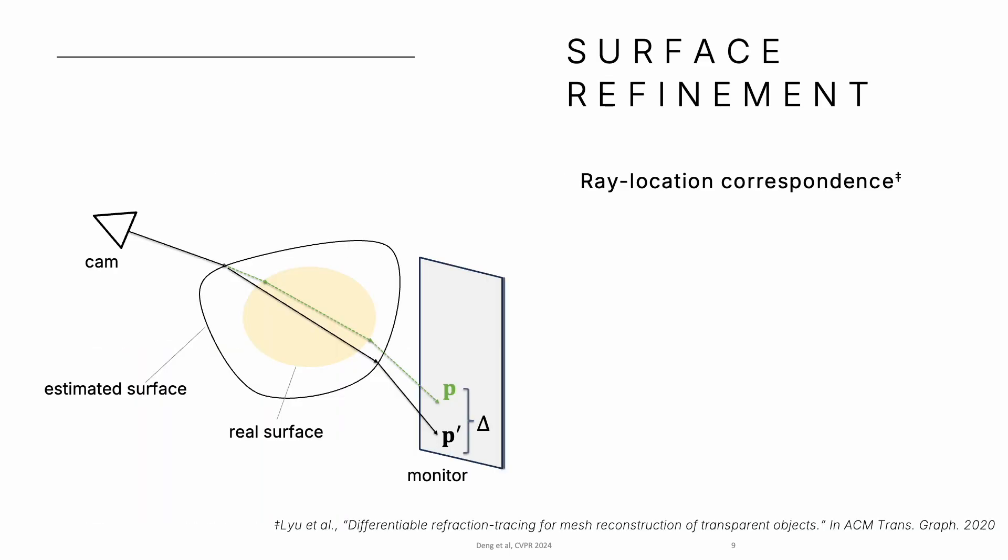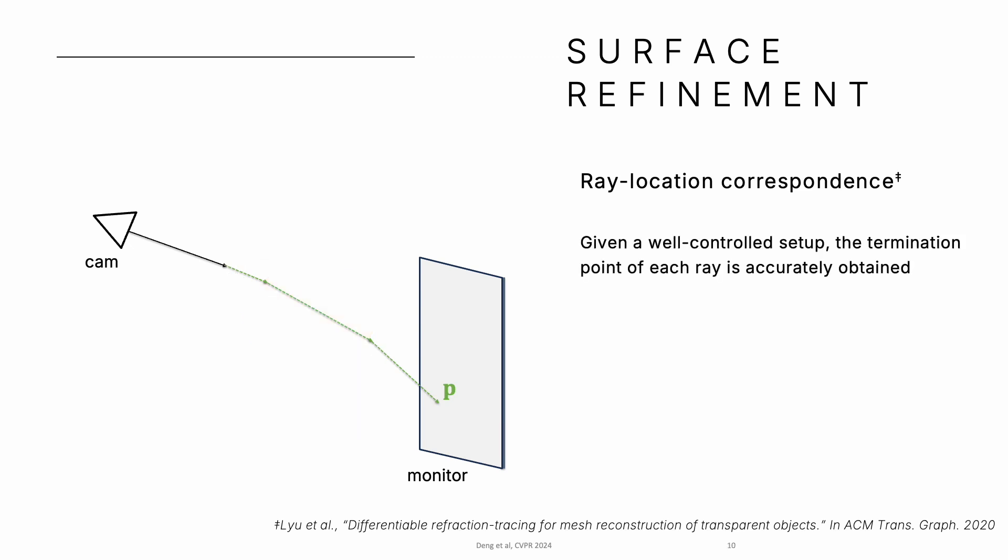To model transparent objects, a classical way is using ray location correspondence. Given a well-controlled setup, the termination point of each ray is accurately obtained.